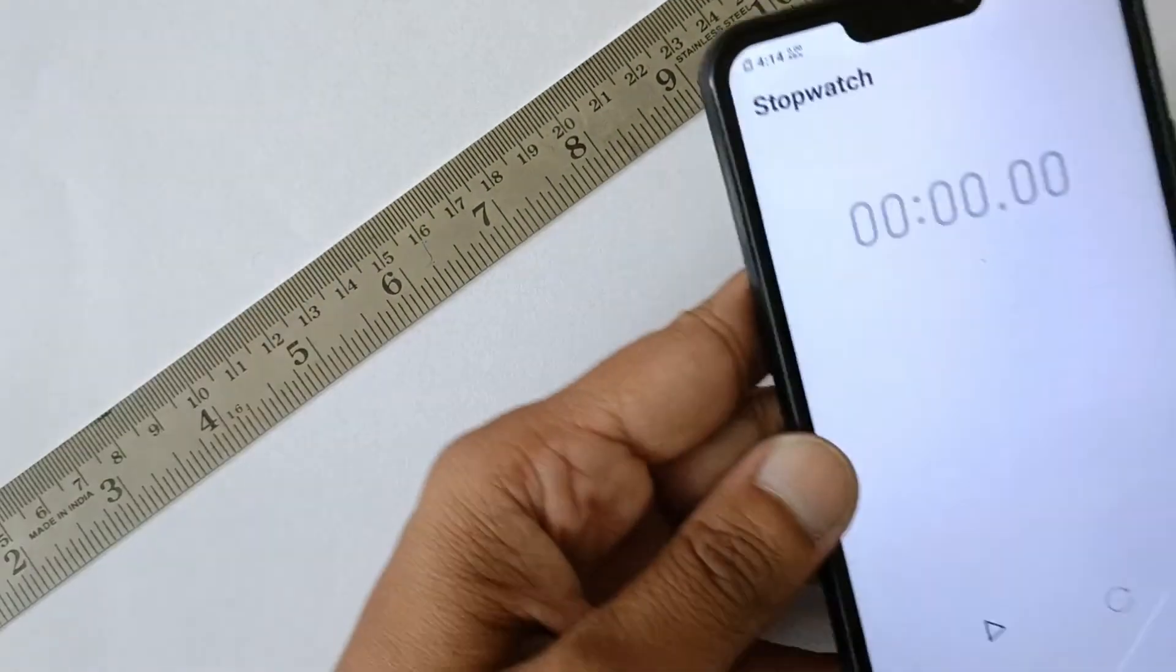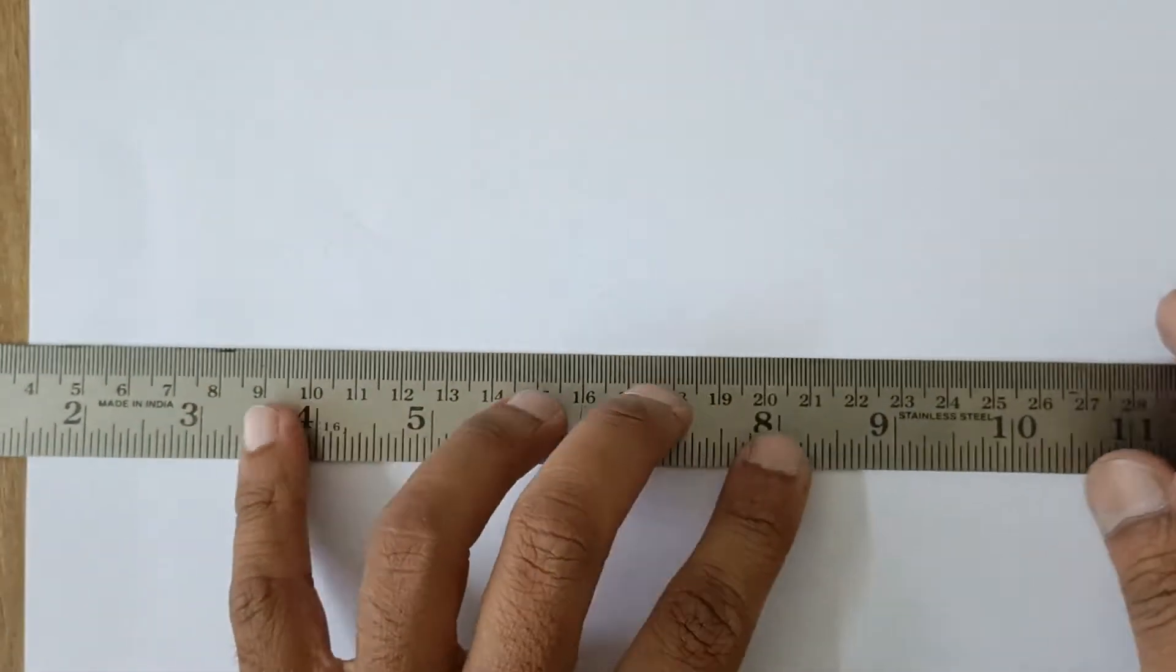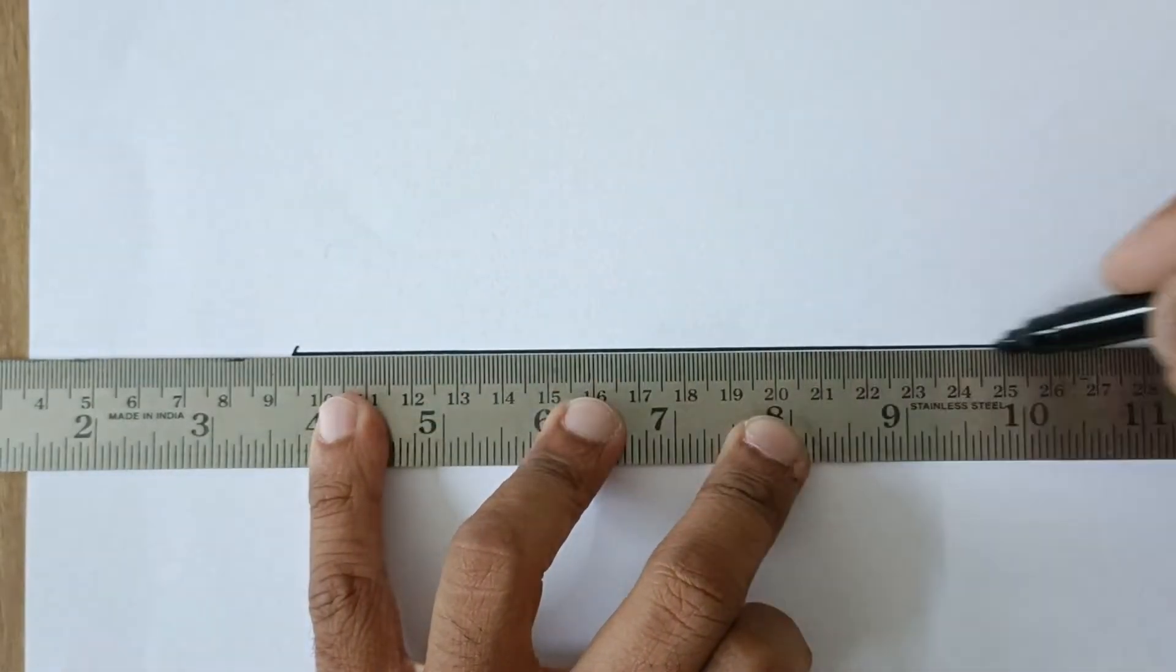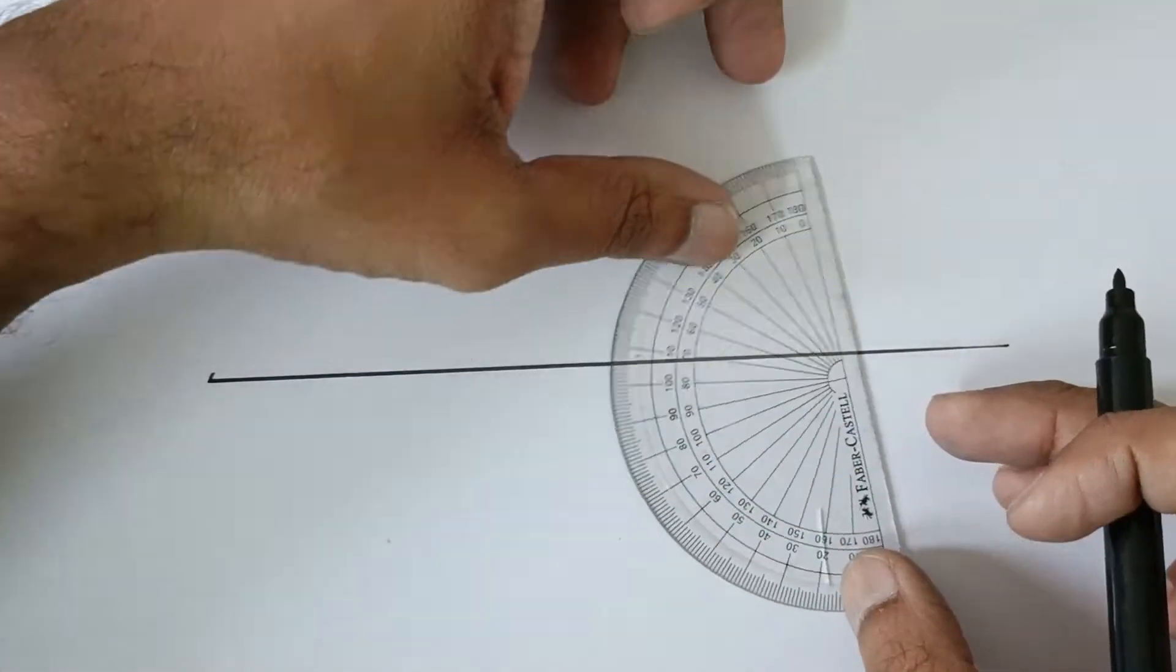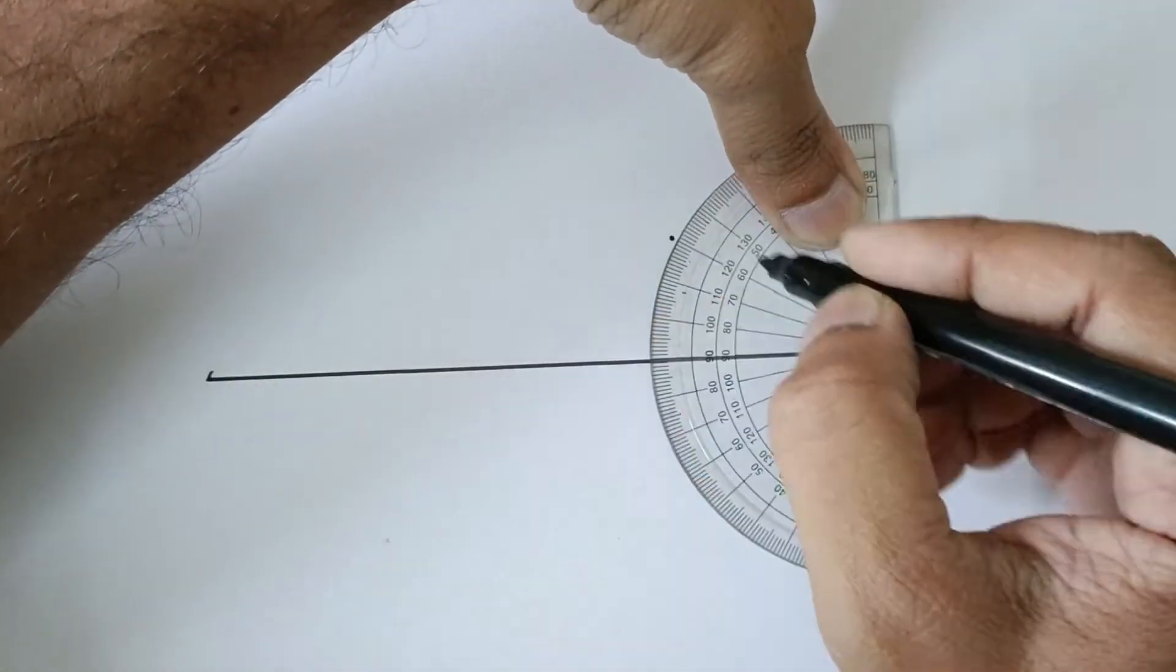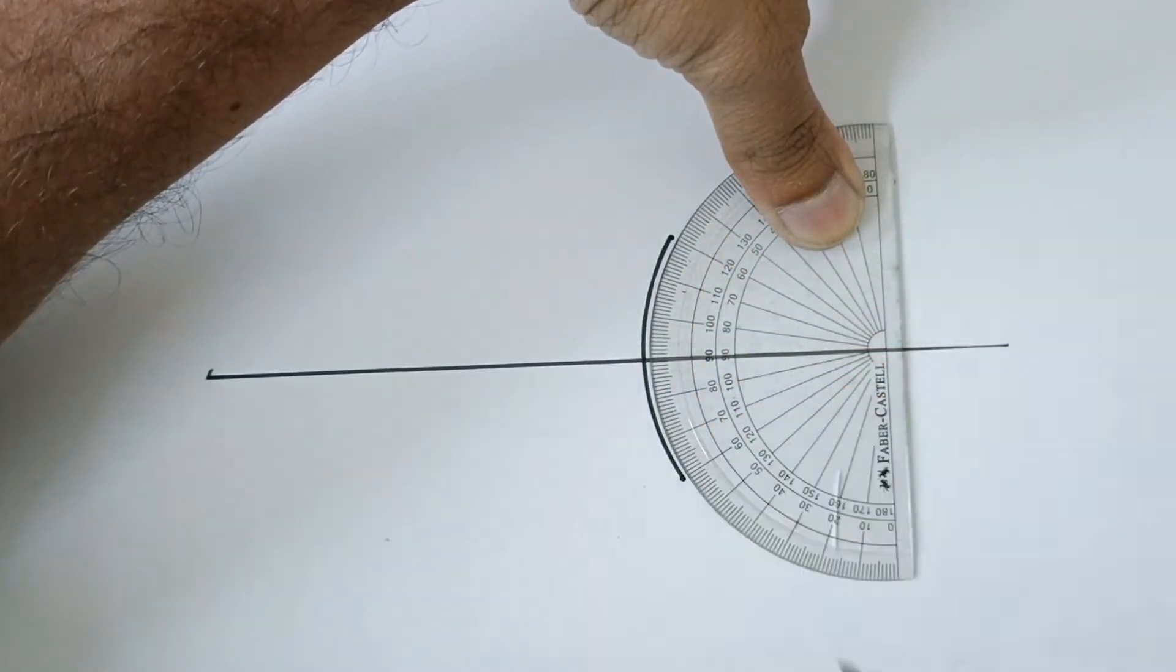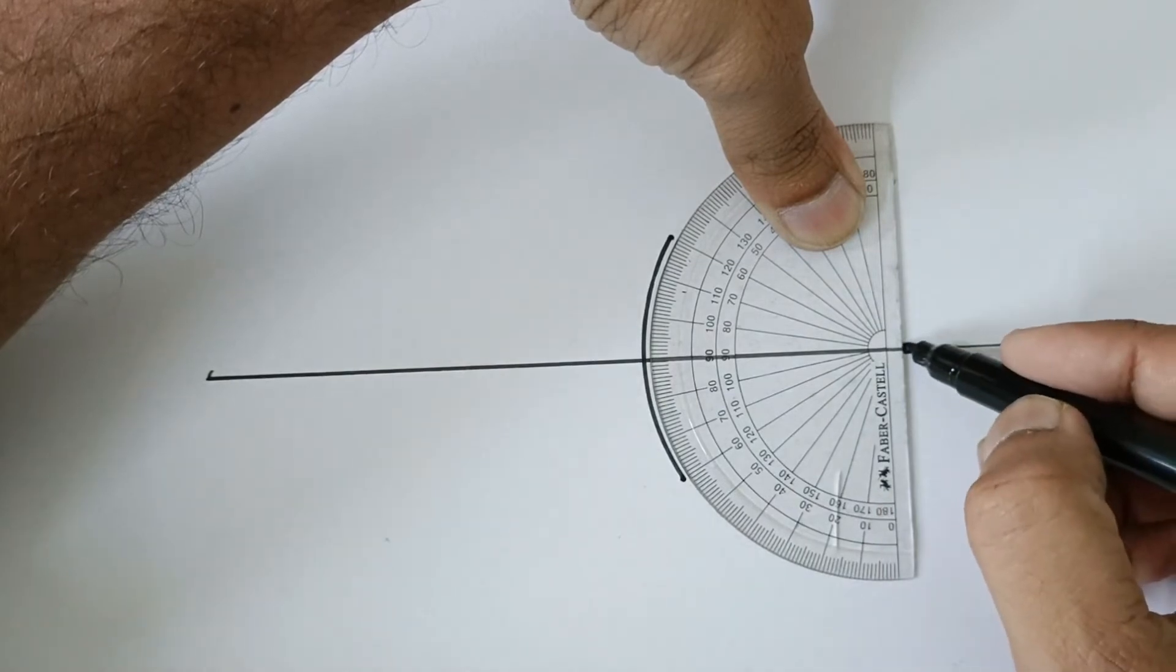So first of all let's start the stopwatch and draw a straight line, any length. Now place the protractor on this line and then mark 120 degrees and then 60 degrees and draw a curve. Then this line is perpendicular to our line, so mark this point.